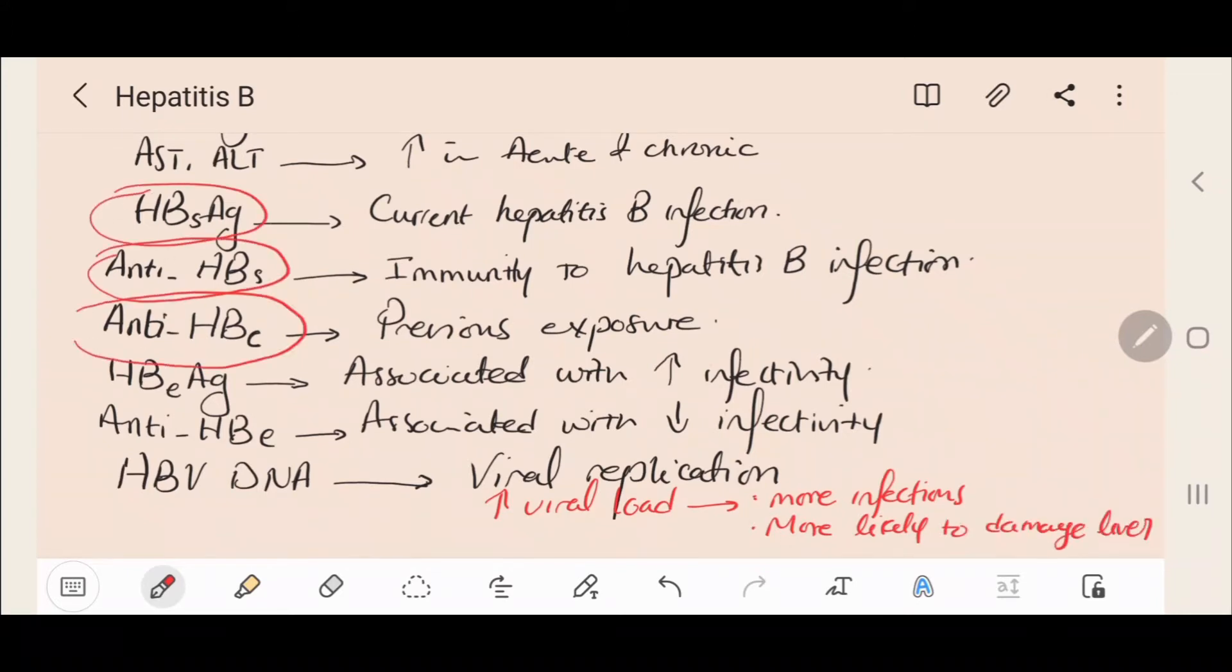Increased viral load means more infectious and more likely to damage the liver. Patients of unknown status should always have three initial tests performed: Hepatitis B surface antigen, Hepatitis B surface antibody, and Hepatitis B core antibody. That is to determine infectious status and the need for vaccination.